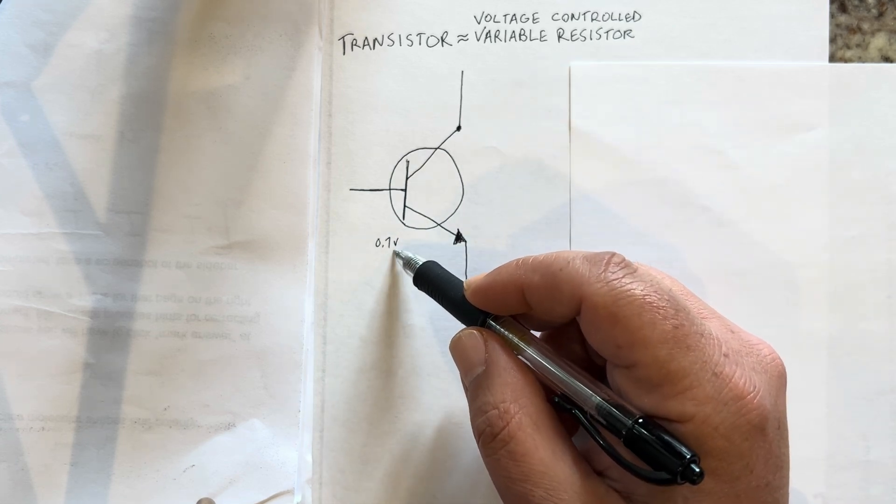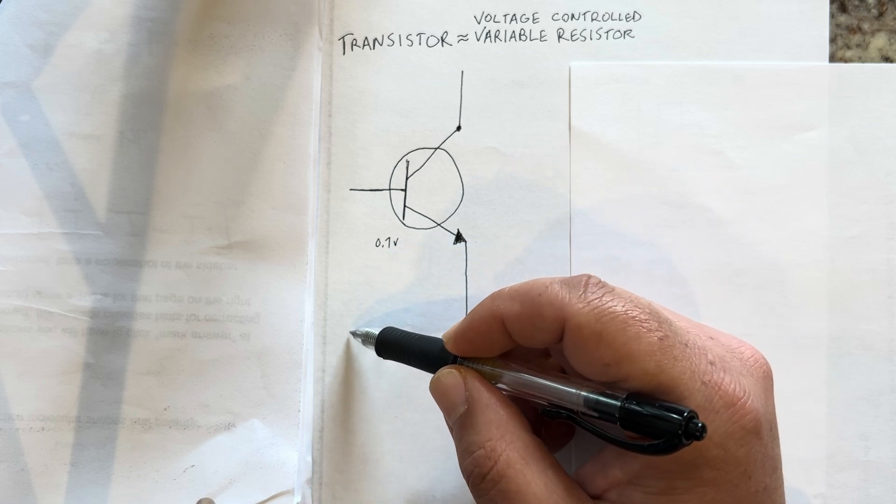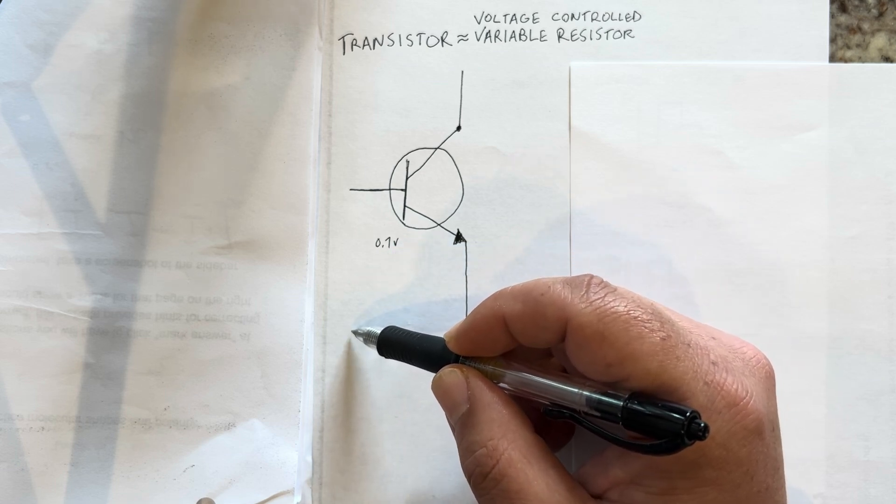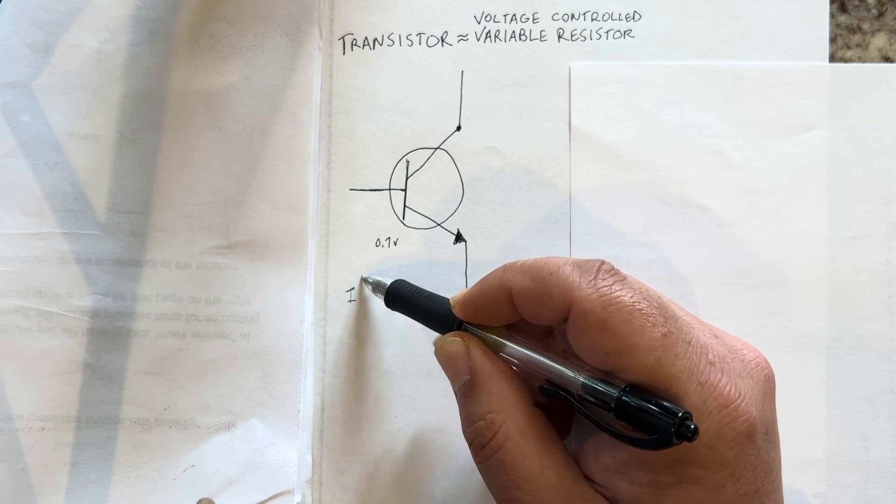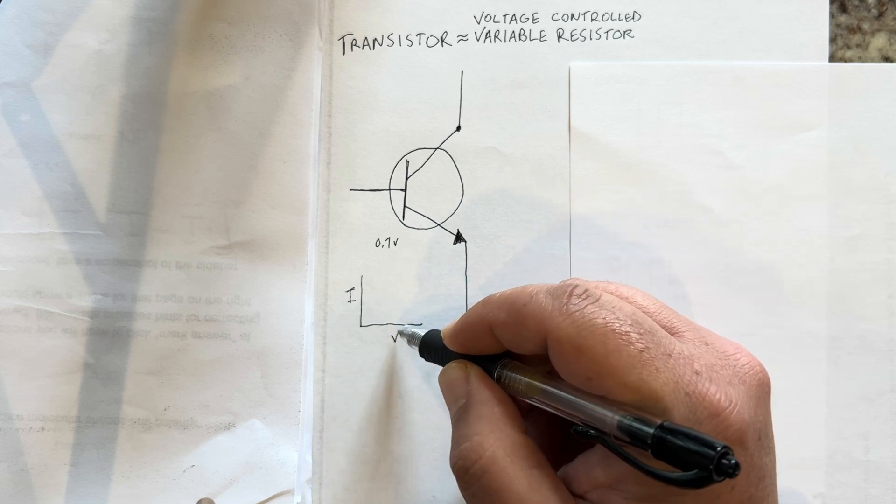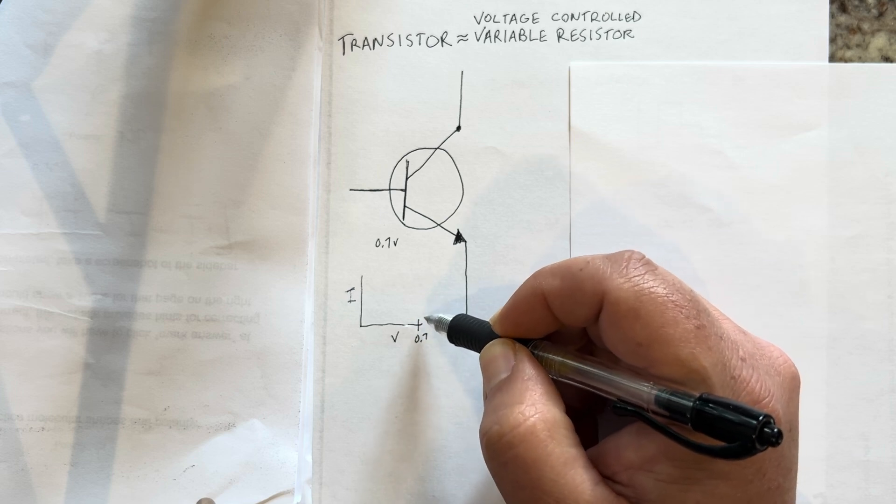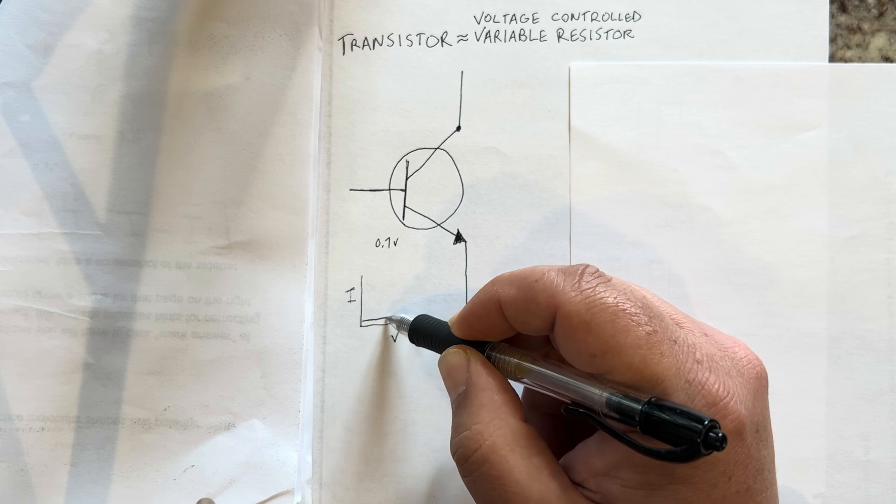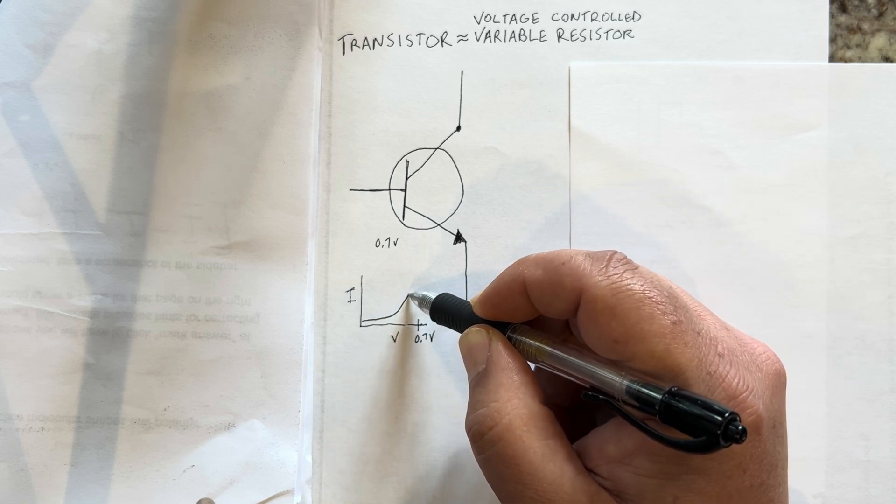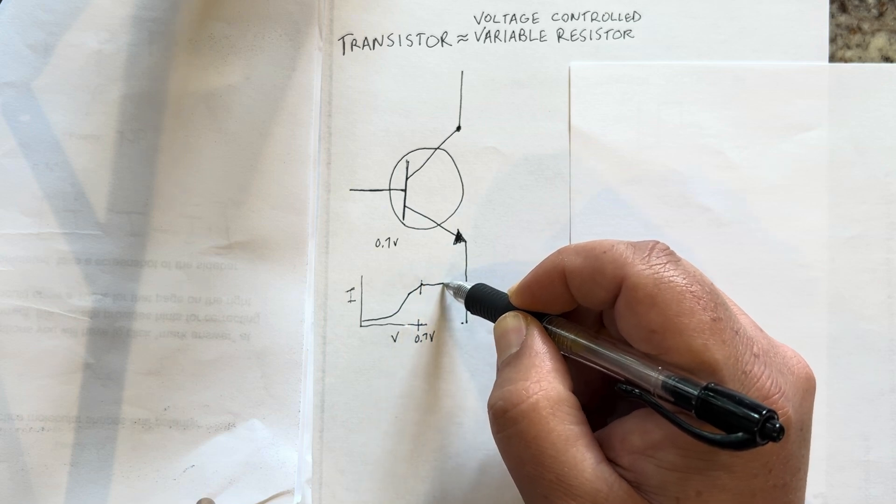If you're below 0.7 volts, the amount of voltage in incremental fashion applied - if you were going to do a current versus voltage graph before the transistor turns on - if this is the 0.7 volt range, it looks something like this.